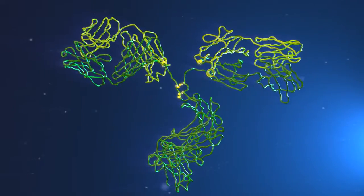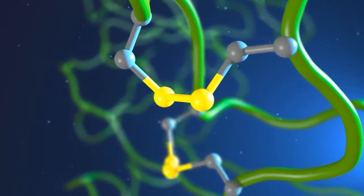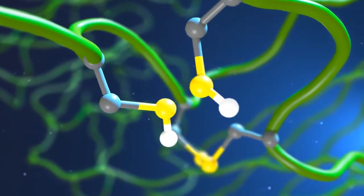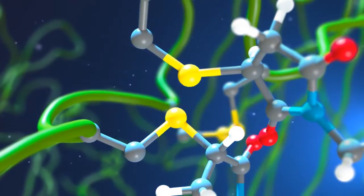The eight cysteines involved in these bonds are a common target for creating ADCs. Mild reduction breaks some of the inter-chain disulfide bonds, exposing pairs of free sulfhydryl groups that quickly react with linkers to bind pairs of drugs to the antibody.